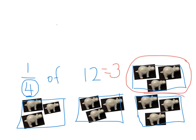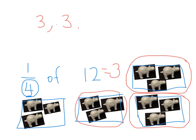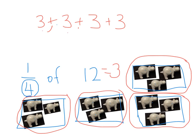This is another quarter — one group is three. Another group is three. Here's another group of three. And here's another group of three. Now if we were to add those up: three, six, nine, twelve. We know that equals twelve. So my twelve hippos have been separated into four groups. A quarter of twelve equals three.